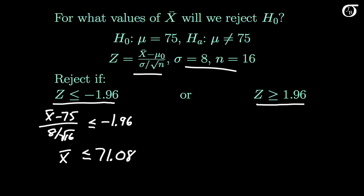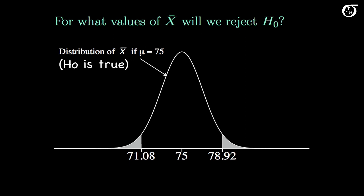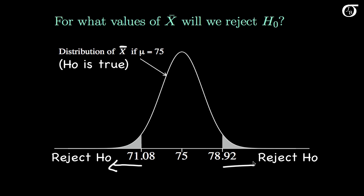Similarly on the other side, we'll reject the null hypothesis if x-bar minus 75 over 8 divided by the square root of 16 is greater than or equal to 1.96. Solving for x-bar, we'd reject the null hypothesis if x-bar is greater than or equal to 78.92. We've re-expressed the rejection region from in terms of z to in terms of x-bar. We reject the null hypothesis if the sample mean is less than or equal to 71.08, or greater than or equal to 78.92.